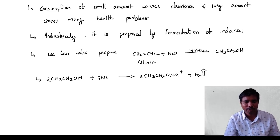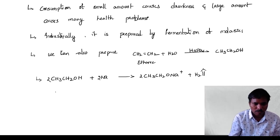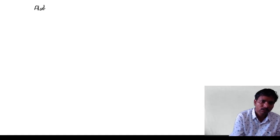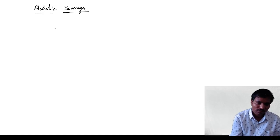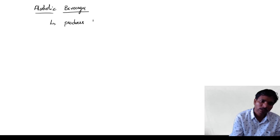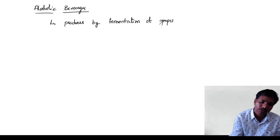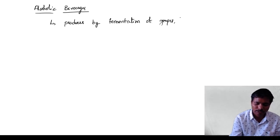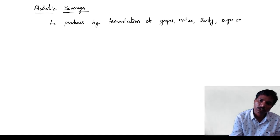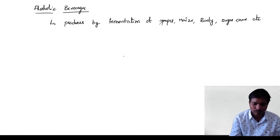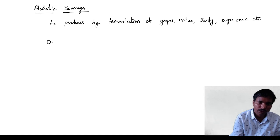After this, we are going to discuss some alcoholic beverages. Generally, these are produced by fermentation of grapes, barley, and other sources. And some of the distilled beverages have higher percentages of alcohol.